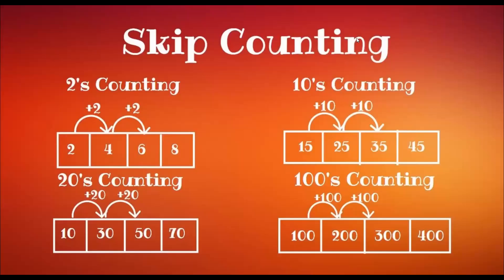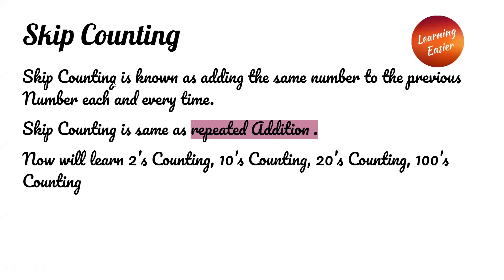Welcome to learning easier. Today we are going to learn about skip counting. Skip counting is known as adding the same number to the previous number each and every time. Skip counting is the same as repeated addition. Now we will learn twos counting, tens counting, twenties counting, and hundreds counting.